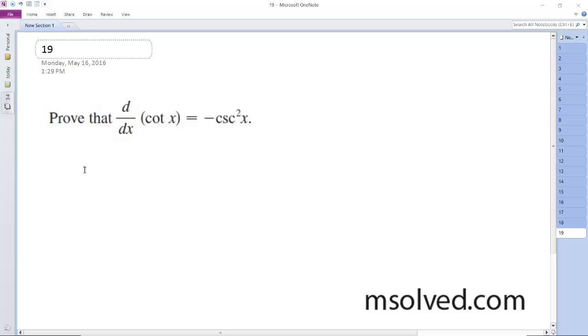Prove that the derivative of the cotangent of x is equal to negative cosecant of x. So cotangent of x is the same thing as cosine of x over sine of x, and we'll use the quotient rule.